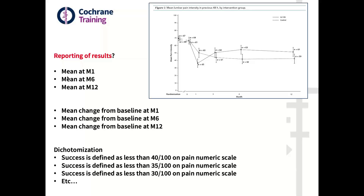If you were the investigator and were convinced that the injection of steroid is beneficial, you might be more likely to choose some results than others. Particularly, the results most in favor of the experimental treatment are those at one month. But results at six months and 12 months show that the pain level is going to be higher in the experimental treatment compared to the control group.